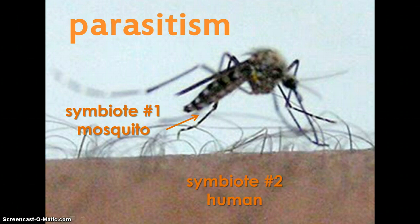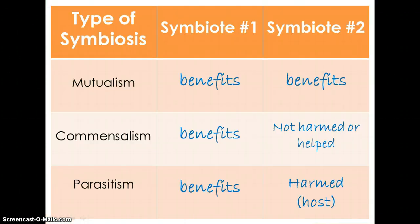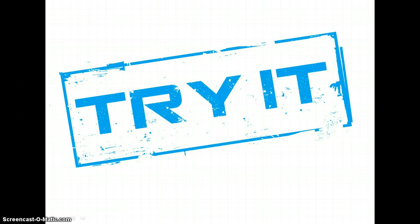Now that we've looked at the three different types of symbiosis, let's see what your answer chart should look like. Please confirm that you have these answers on your worksheet. Now that you've seen examples of the different types of symbiotic relationships, we're going to try it. On your worksheet, there is a section numbered one through six. As we go through the pictures, document what kind of symbiotic relationship the organisms have — mutualism, commensalism, or parasitism. Here we go.